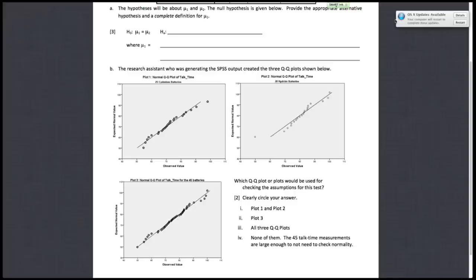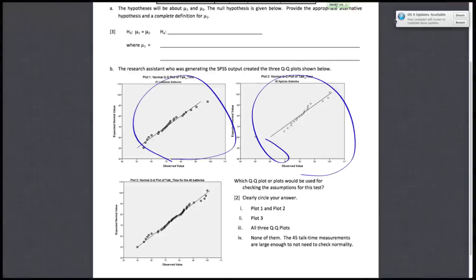And you'll note that for plot 3, that's a QQ plot of talk time for the 45 batteries combined. So that's not what you want. You don't want the combined populations. You want separate populations. So in this case, we'll be using plot 1 and plot 2. Plot 1 is a QQ plot of talk time for only cadmium batteries. And plot 2 is a QQ plot for just hydride batteries. So we'll want both of these QQ plots in order to test our assumption that the two populations are normal.